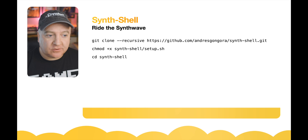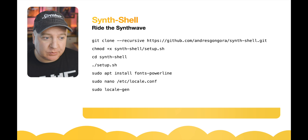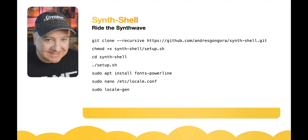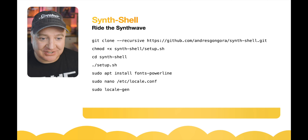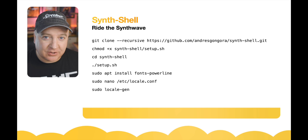Let's look at how we can install Synth Shell. First we need to clone the Git repository: git clone --recursive and then the address github.com/andres-gongora/synth-shell.git. We're then going to add the execute permission to the Synth Shell setup program.